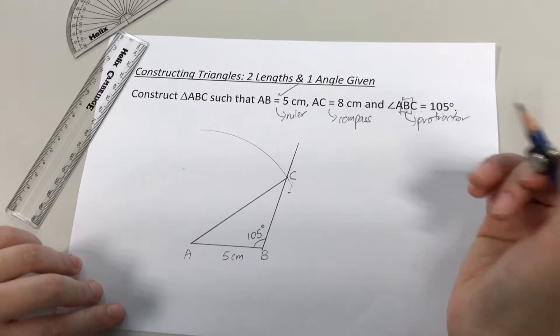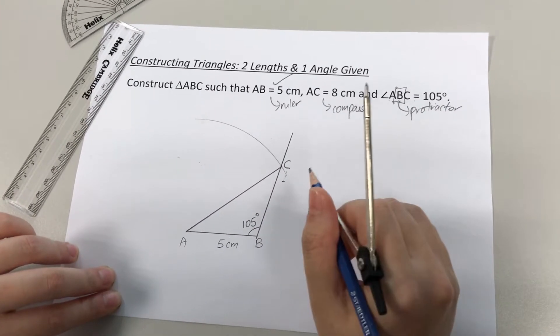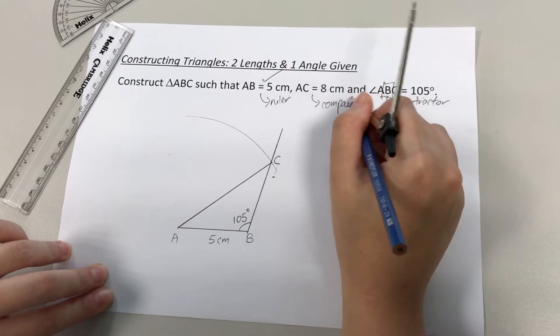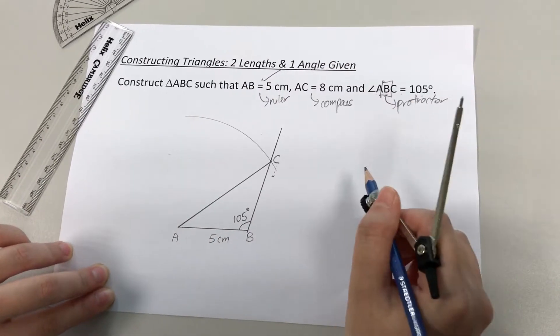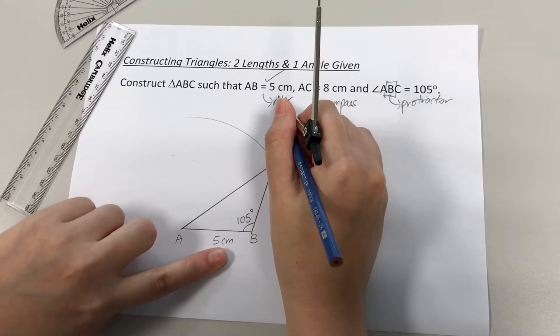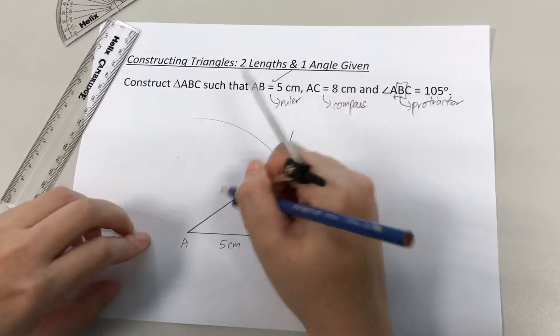And that would complete your triangle, but there's one last thing that you have to do. I need to label all the information given. So I have AB 5cm done, AC 8cm.